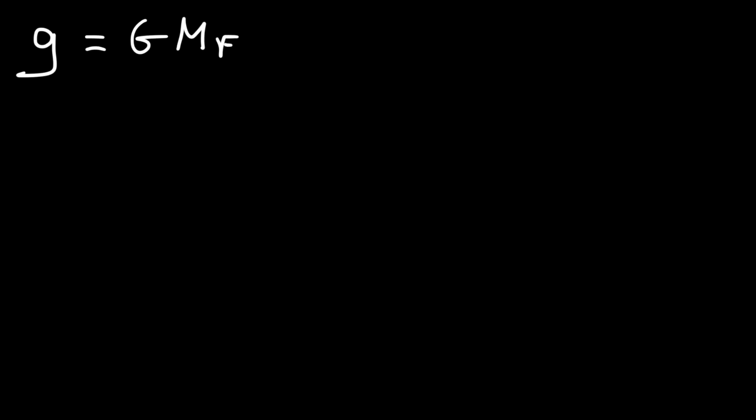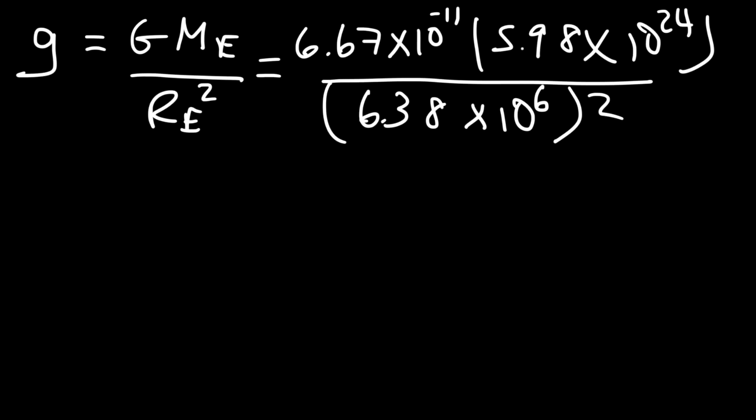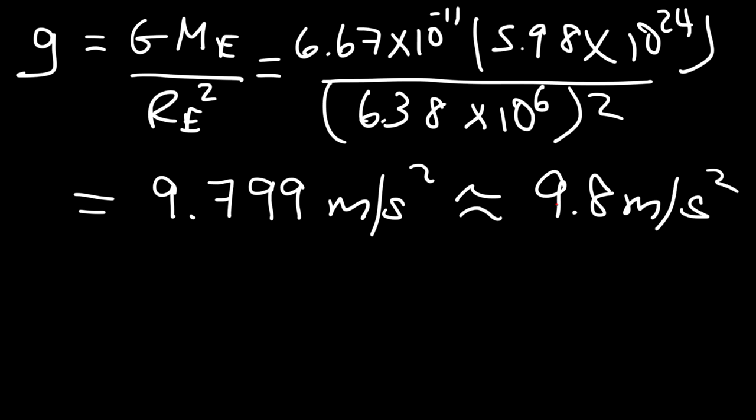So we're going to use the mass of the Earth and the radius of the Earth. So g is 6.67 times 10 to the minus 11. The mass of the Earth, we said it's 5.98 times 10 to the 24 kilograms. And the radius of the Earth is this number again, in meters. So go ahead and type that in. So you should get 9.799 meters per second squared, which you can round to 9.8 meters per second squared.